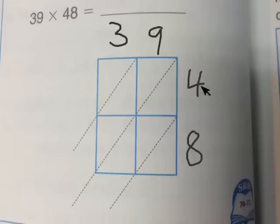Then just like before we're going to multiply four times nine and then four times three. Think about those for a second. So you know four times nine is 36 and four times three is twelve.